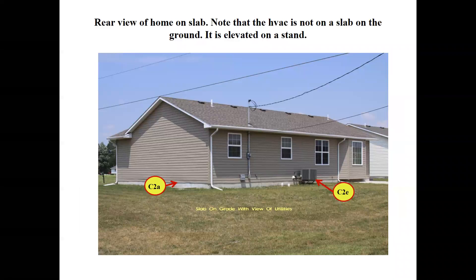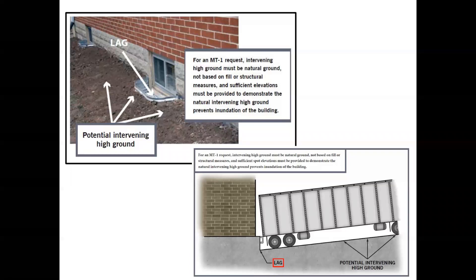C2E is the lowest elevation of machinery and equipment — in this case an air handling unit on a metal stand on the south side of the house. Sometimes window wells cause confusion with C2F. The lowest adjacent grade will most likely be the bottom of the window well. You'd note any intervening higher ground around the window well in the comments section of Section D. While not important for insurance rating, it becomes very important if you use the elevation certificate to request a letter of map amendment.